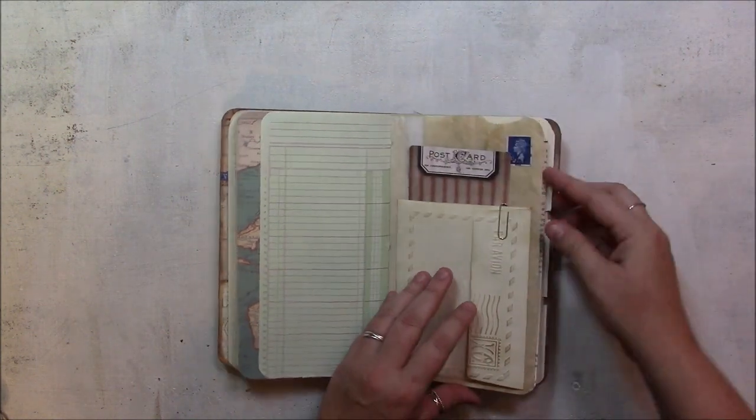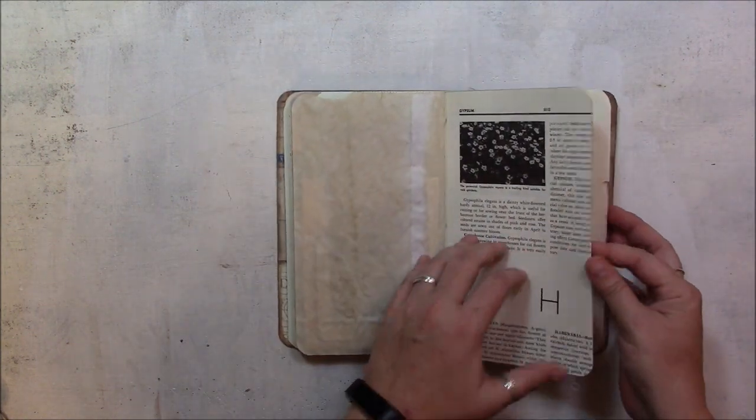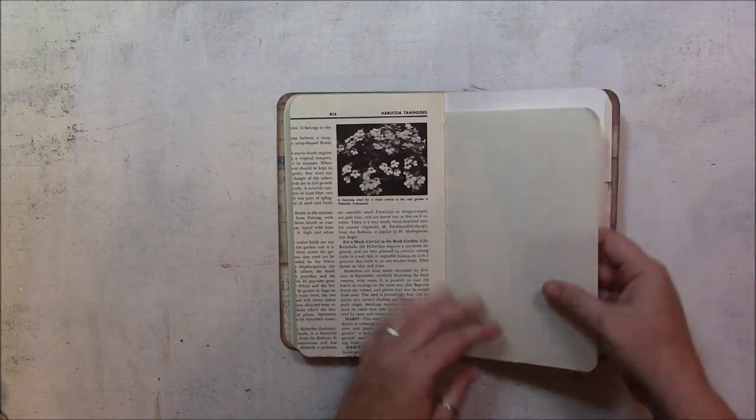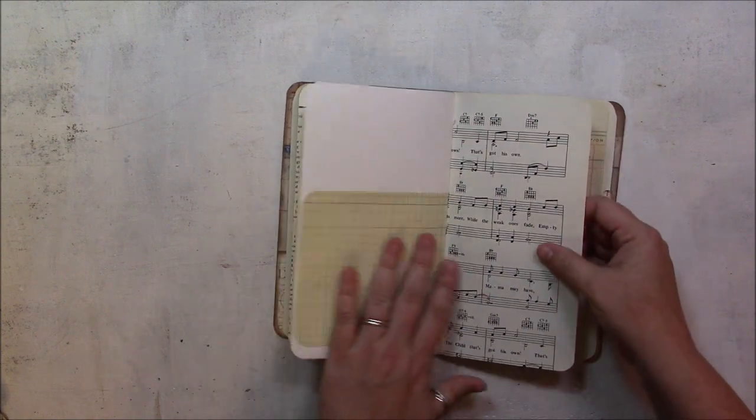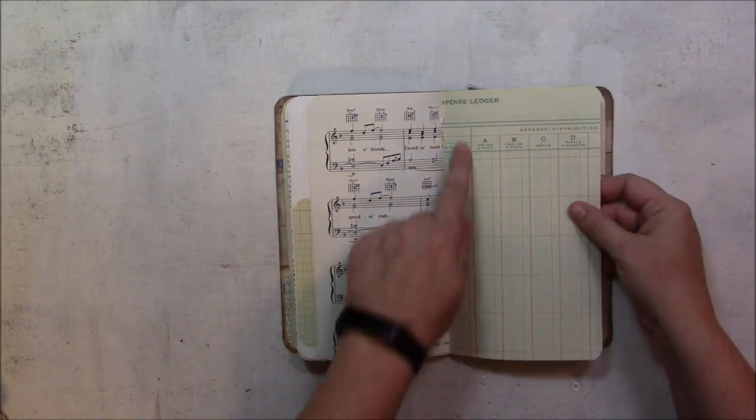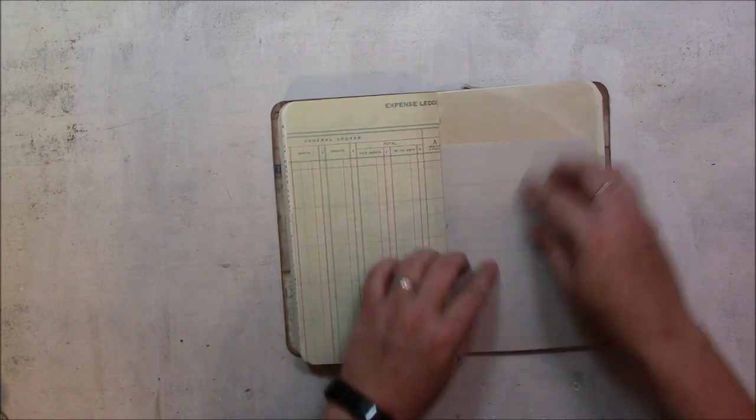It's a fun surprise for me. Alright. Moving on. A book page with some gardening book stuff. Ledger paper. It even says ledger right there on that one. It's just an expense ledger.